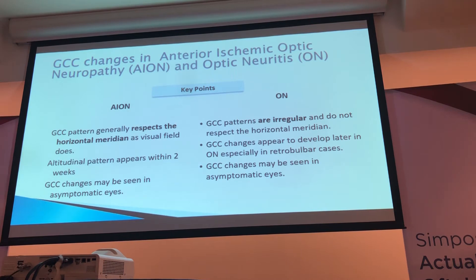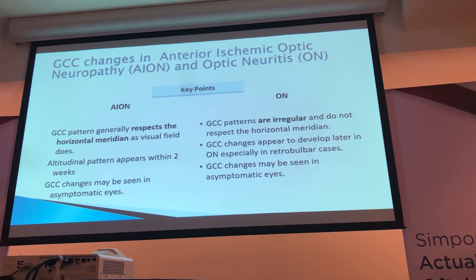The key take-home point is this altitudinal meridian that's respected in NAION versus optic neuritis — especially if you see a patient after the original event and you're trying to figure out, going back, what could have happened. Looking at the GCC can be helpful for this.